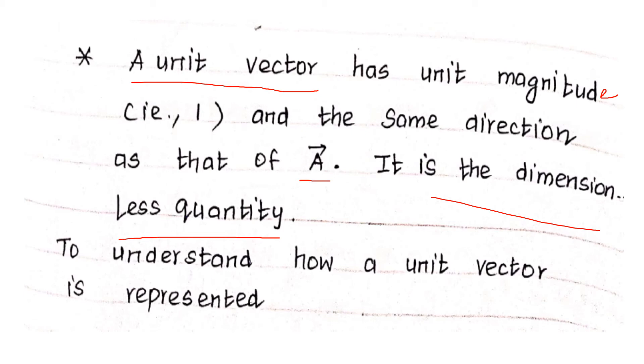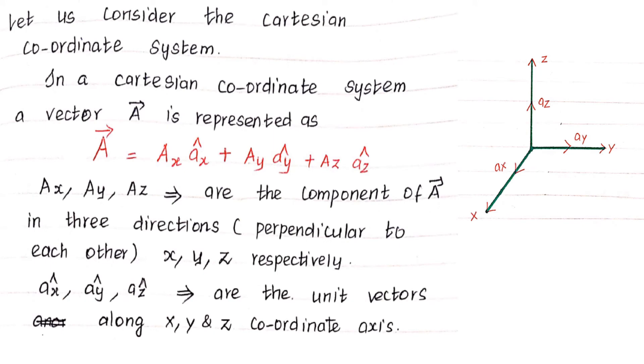To understand how a unit vector is represented, for better understanding, I have to consider the Cartesian coordinate system. In the Cartesian coordinate system, vector A is represented as. This is the Cartesian coordinate system. The coordinate system consists of three axes, X, Y and Z. All the three axes that consist of unit vector, the X axis, the unit vector is a_x. In Y axis, unit vector is a_y and Z axis unit vector is a_z. Three unit vectors are there.